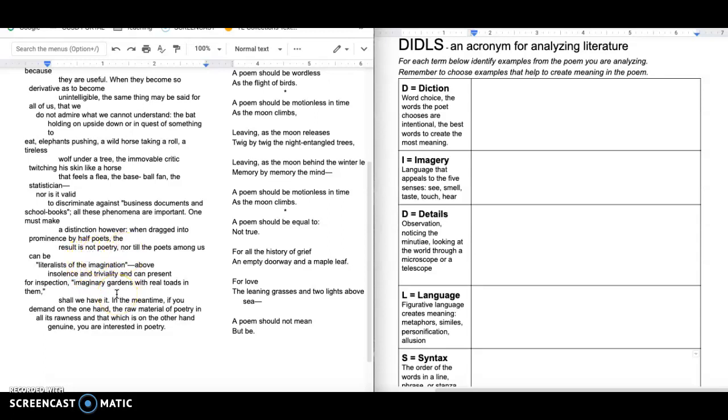And then she says, nor till the poets among us can be literalists of the imagination. She's calling on the poets here saying, you've got to make your imagination real for us. Above insolence and triviality can present for inspection. So until a poet among us can present to us. And then this is the example she gives. And it's just beautiful. And it's in quotes. So my guess is it's actually an allusion to something. You should look that up.